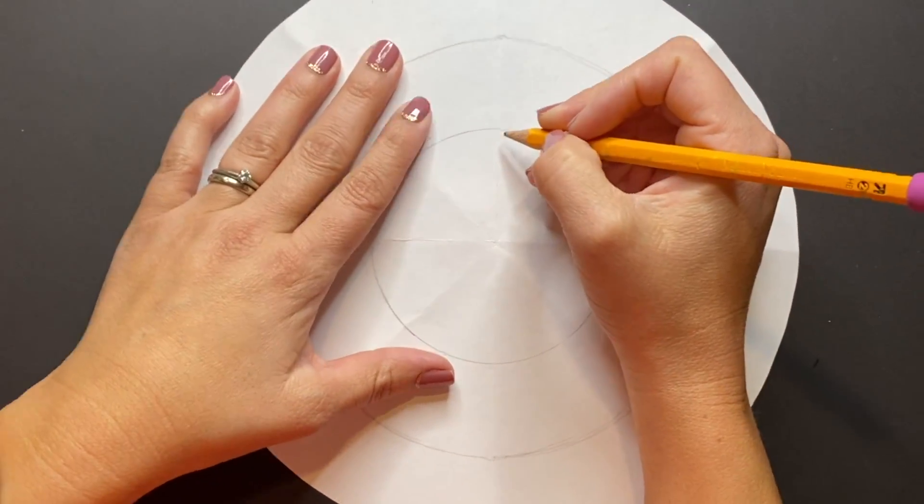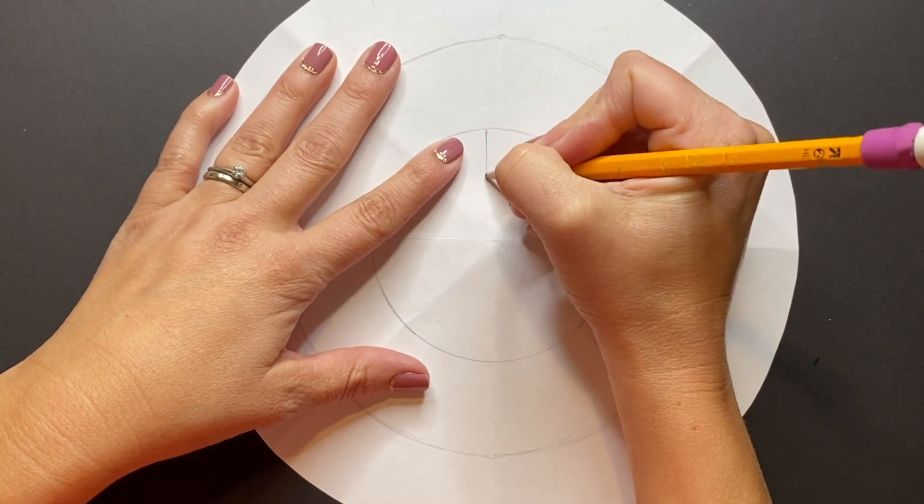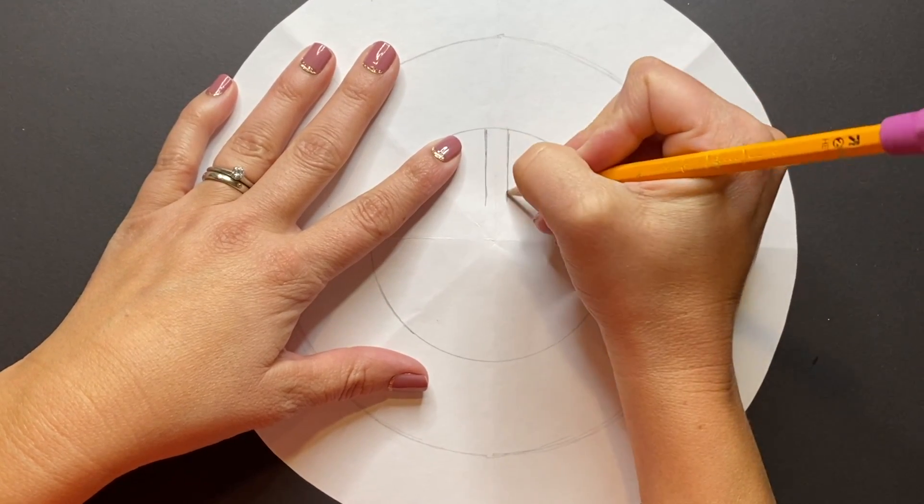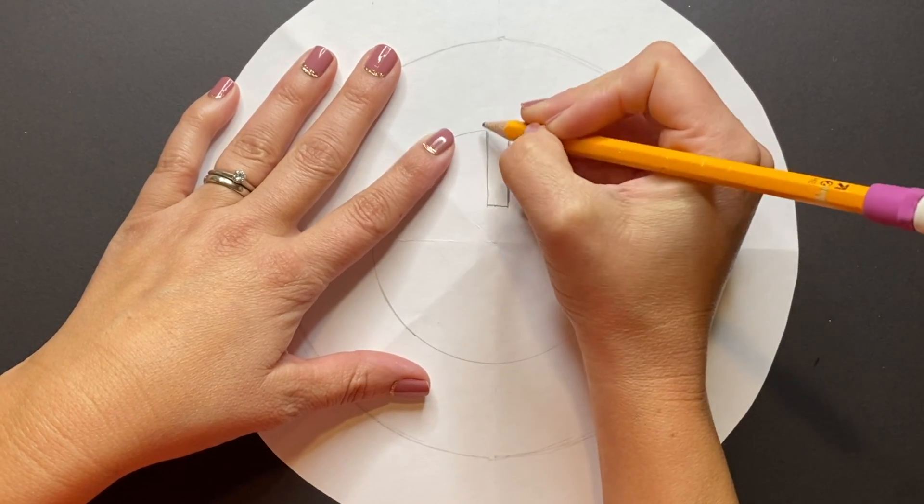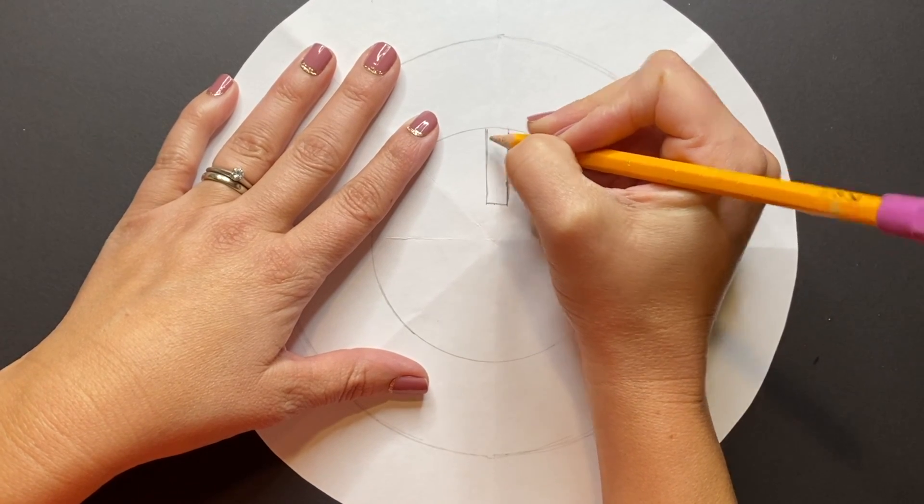We are now going to begin our Aztec sun's face, so I'm going to start by drawing a vertical line down and another vertical parallel line down, and then connect them with a horizontal line across. That's going to be the Aztec sun's nose.